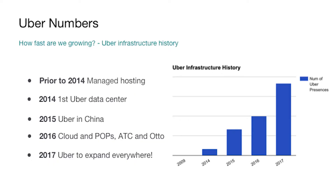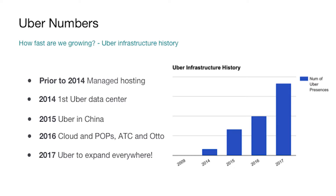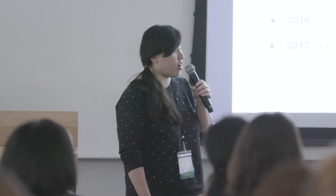Here is a short history of Uber's physical infrastructure. Prior to 2014, Uber was managed in a hosting facility called Peak. While Uber grew, the capacity need could not be met by this hosting facility, and most importantly, we had a couple of outages. In October 2014, we started to build Uber's first data center. In 2015, we continued to expand, building multiple data centers in North America and also expanding business into China. In 2016, our footprint expanded into cloud presences, we built a number of network POPs, and we started to manage infrastructure for autonomous driving vehicles. From 2017 on, Uber is going to expand everywhere.